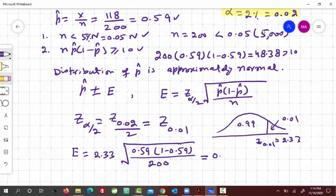and this would turn out to be 0.081 approximately. And so our 98% confidence interval is p hat plus minus e, so p hat was this value here for p hat, so that is 0.59 plus minus 0.081, and that's it.